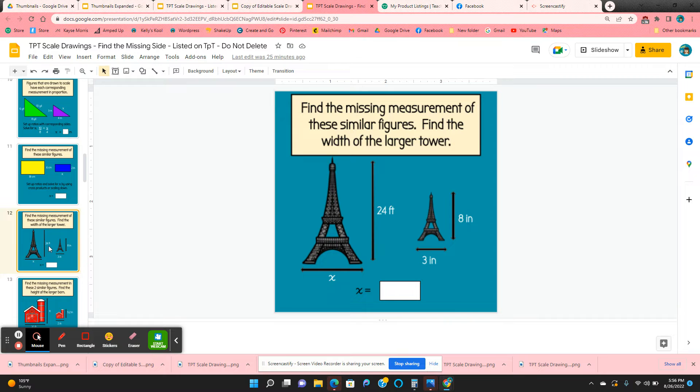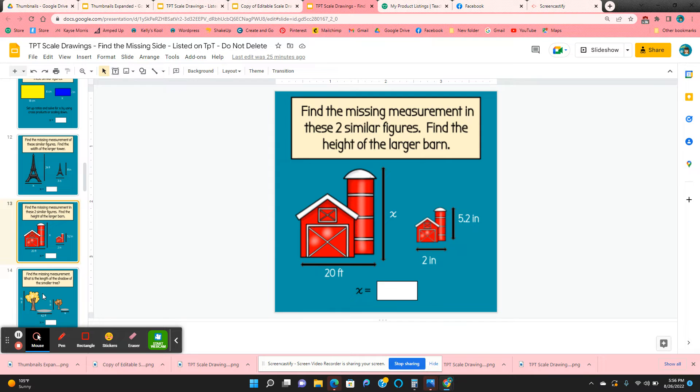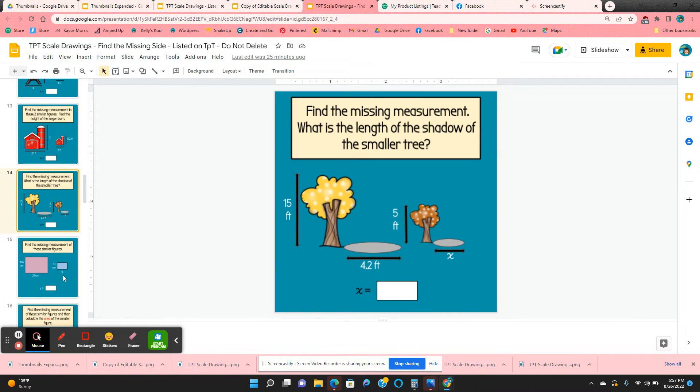And then I have some real world examples. So two towers that are identical, same shape but different size, and finding the missing measurement. And then there are some other real world examples. This one has the shadows where they can compare the shadows of the two trees.